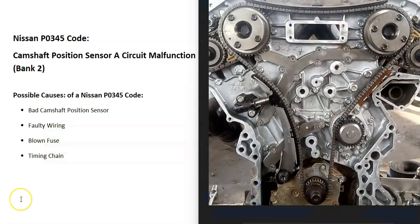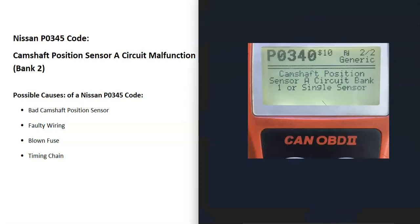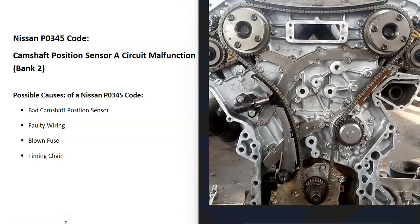Another thing that sometimes happens is the timing chain becomes stretched and it's throwing the sensor off. Although usually when this happens, it's going to throw off the other sensor too. So if you're also getting a P0340 code, which is the camshaft position sensor on bank 1, then it's possible there's something going on with the timing chain - it's slipped a notch or stretched really bad.